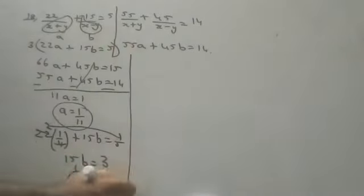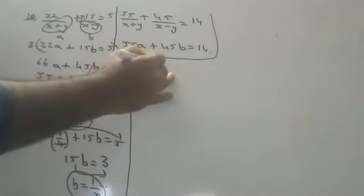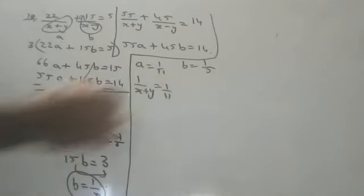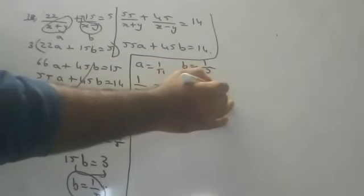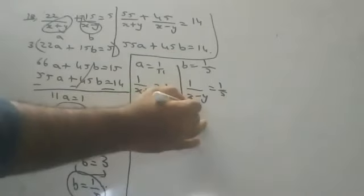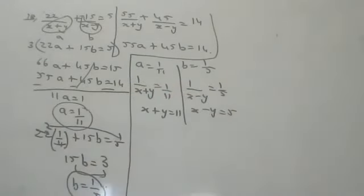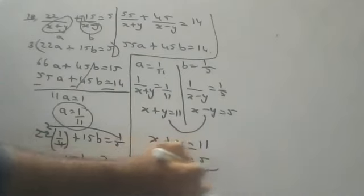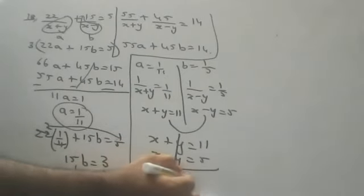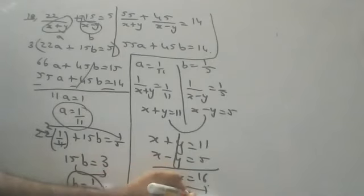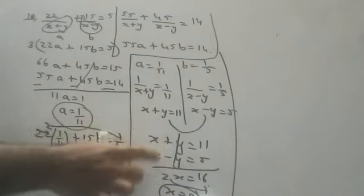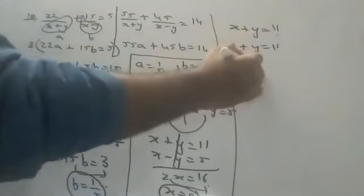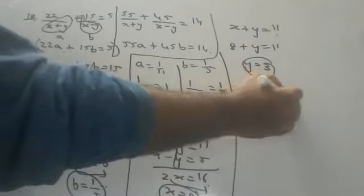We have a = 1/11 and b = 1/5. Since a = 1/(x+y) = 1/11, taking reciprocals gives x + y = 11. Since b = 1/(x-y) = 1/5, we get x minus y = 5. Adding: 2x = 16, x = 8. Substituting into x + y = 11: 8 + y = 11, so y = 3. Answer: x = 8, y = 3.